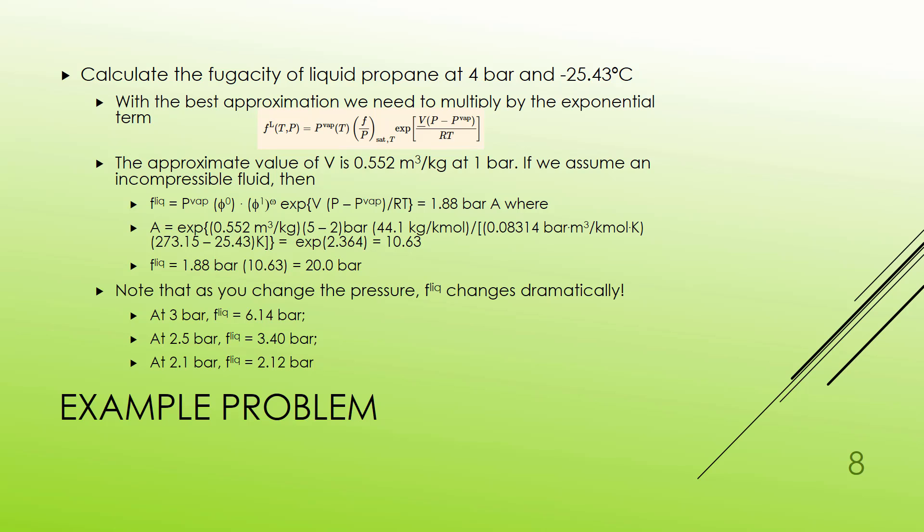Now if I had just taken the pressure and said oh that's close to the answer I would have been fairly far off. Now I do want you to notice that this is a strong function of pressure. If you continue these calculations for other pressures, so I did it for 3 bar, 2.5 bar, 2.1 bar getting closer and closer to the vapor pressure at 2 bar, I saw that at 3 bar it's roughly twice the actual pressure. At 2.5 bar it's a little larger. At 2.1 it's very close to the vapor pressure. But this is a strong function of pressure. So doing the pressure correction seems to be very important for liquid fugacities.